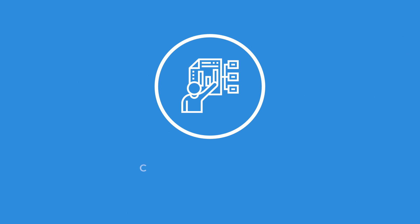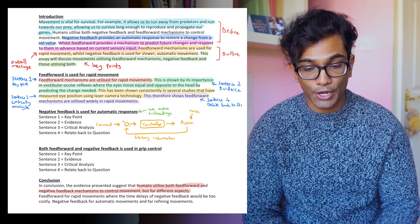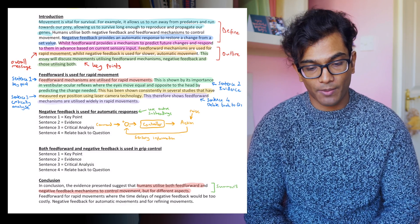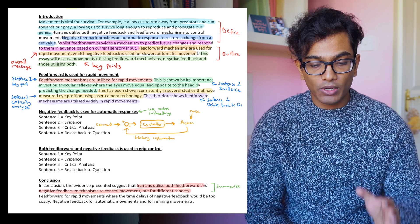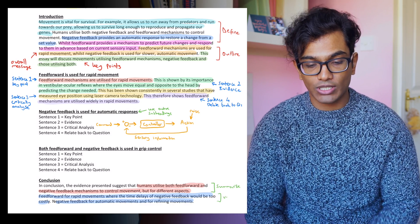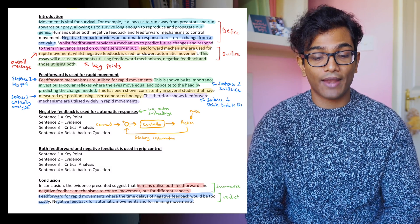Now let's move on to the final aspect of the essay: the conclusion. The conclusion must summarize your whole argument, bring it to a nice end, and give a verdict. It's essentially a grown-up version of the introduction — in your introduction you state the key points you're going to make, in the main body you flesh them out with evidence and analysis, and now in the conclusion you give a mature, well-rounded response. For example: 'In conclusion, the evidence presented suggests that humans utilize both feedforward and negative feedback mechanisms to control movement but for different aspects — feedforward for rapid movement where time delays of negative feedback would be too costly, and negative feedback for automatic and refining movements.'